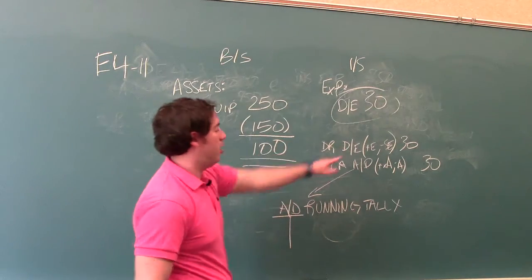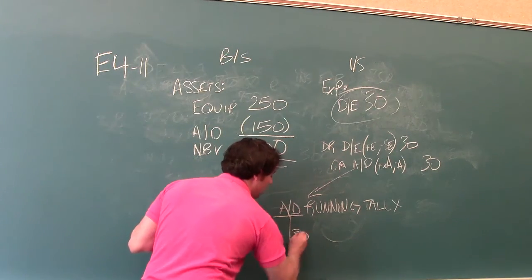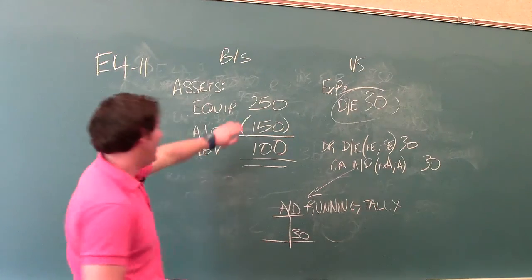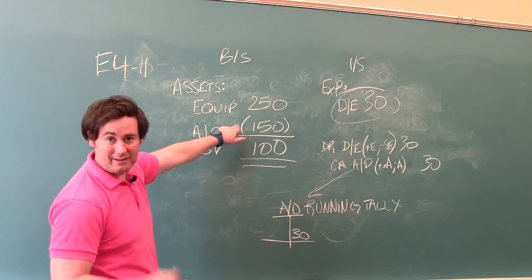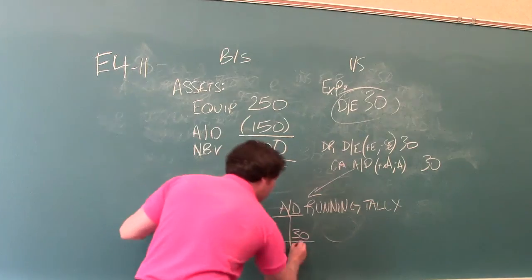So in accumulated depreciation, during the current year we added $30,000 here. We got an ending balance, as they told us, the up-to-date ending balance, of $150,000. Notice it's on the credit side.